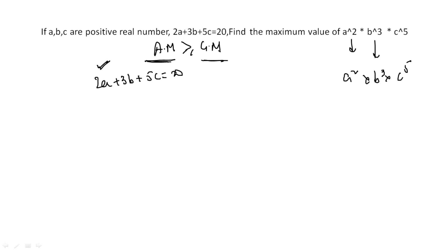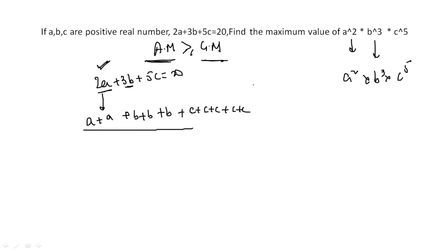I write 2a as (a + a), 3b as (b + b + b), and 5c as (c + c + c + c + c) — five times. Now I count how many elements there are in total: that gives us 10 elements. To find the arithmetic mean I divide by 10, and on the right side I need the same number of elements — 10 — for the geometric mean as well.